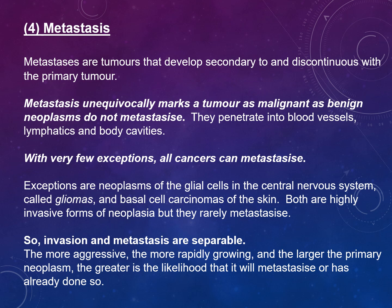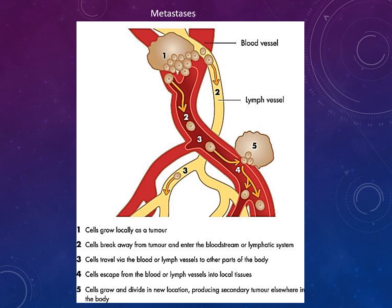Invasion and metastasis are separable. The more aggressive, rapidly growing, and larger the primary neoplasm, the greater the likelihood it will metastasise. Cells break away from the tumour and enter the blood or lymphatic system, travel via blood or lymph vessels, escape at local tissues, and grow and divide in new locations producing secondary tumours elsewhere in the body.